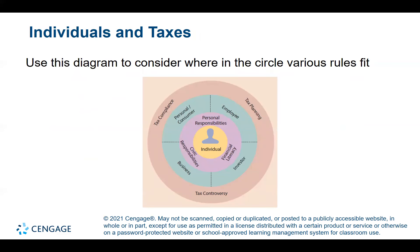There is a diagram used to consider where a various rule fits. You have tax compliance, tax planning, and tax controversy on the outer circle. On the inner circle, you have personal consumer, employee, investor, and business. Ask: is it a tax compliance, planning, or controversy issue? Does it affect the business, a personal consumer, an employee, or an investor? And is it a personal responsibility, a civic responsibility, or a financial literacy issue? These questions help figure out where the rule fits for the individual.